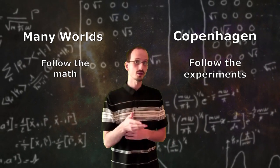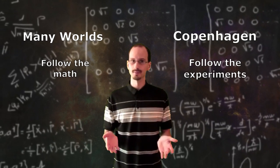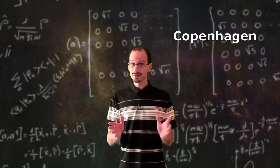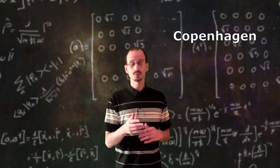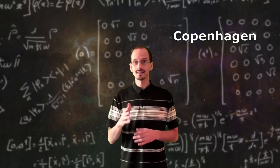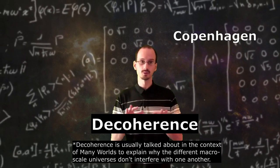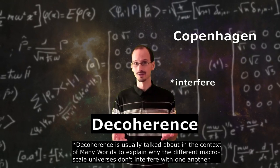However, although they both solve the measurement problem, they both introduce their own new problems. For Copenhagen, how does the information know when it's crossed the threshold of containment to trigger a collapse? The answer might lie in quantum decoherence, when the different parts of the wave function become so noisy that they can no longer interact with each other.